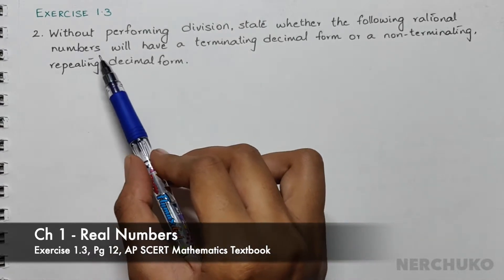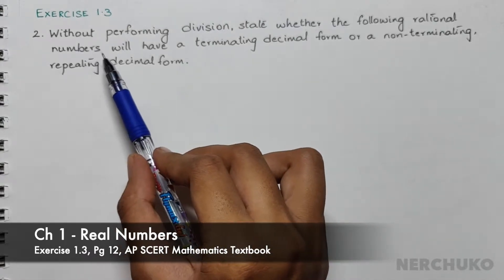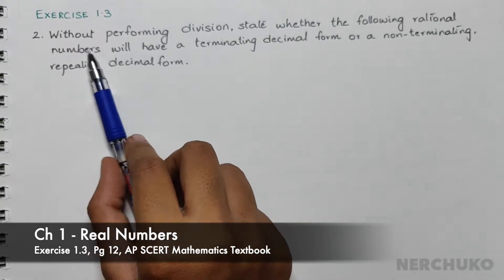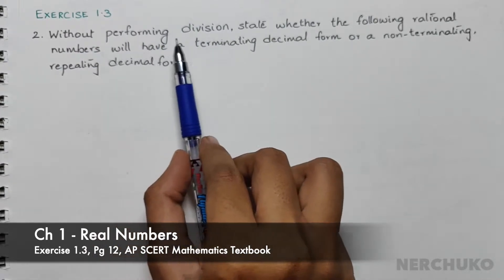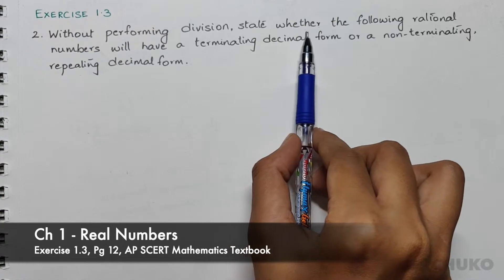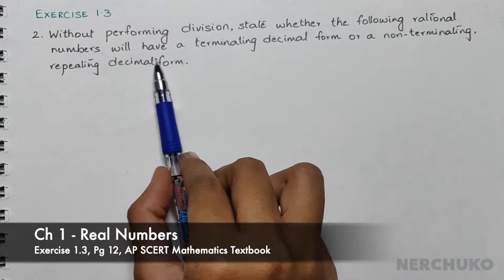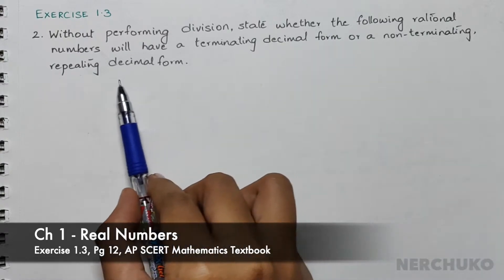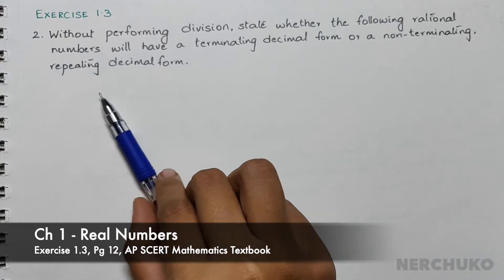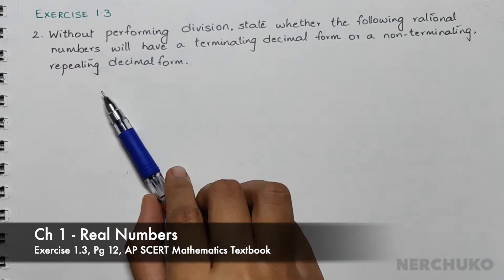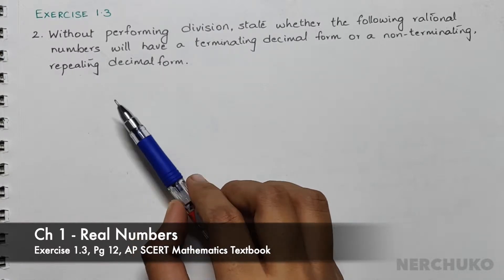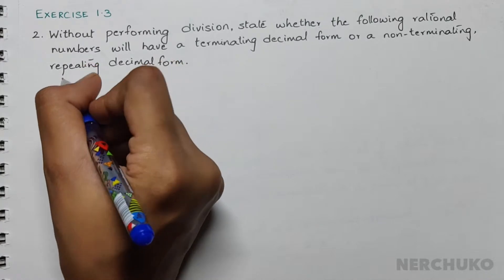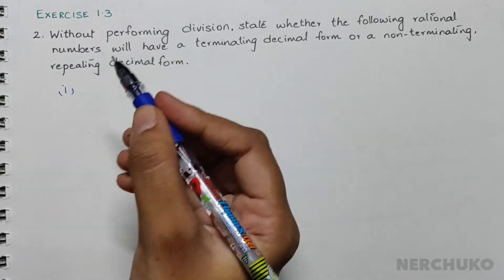Using the previous theorem we have learned, we have to solve further problems. The second question is: without performing division, state whether the following rational numbers will have a terminating decimal form or a non-terminating decimal form. For the previous problem we used long division, but in this problem we are going to use the theorem instead.